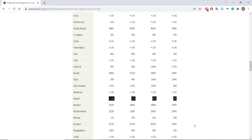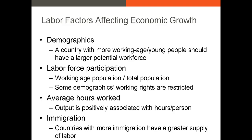The big takeaway from this discussion is that countries with a large percentage of young workers, longer average work hours, and low immigration standards tend to have a higher labor growth rate than countries with older populations, shorter work hours, and strict immigration standards. That's the labor growth rate portion of the Cobb-Douglas production function.